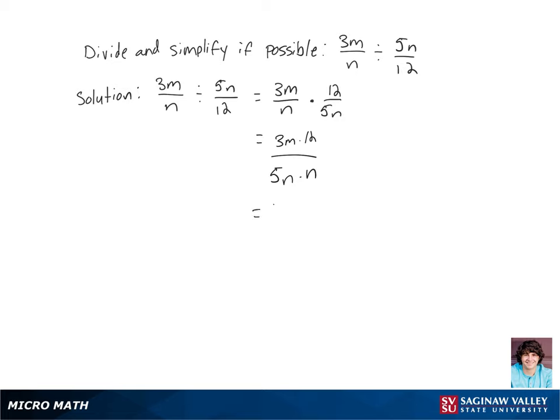And now there's no simplifications that can be done. So 3m times 12 is 36m, and 5n times n is 5n squared. And that is our final answer, 36m over 5n squared.